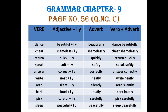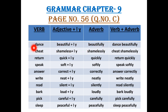As you can see in the picture, there are four columns given. In the first column, verbs are given. In the second column, adjectives. When we add L-Y to the adjectives, it will become an adverb. In the fourth column, you have to add verb and adverb together. So let us do the first question.